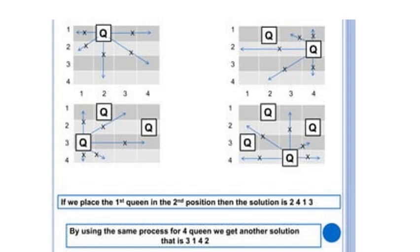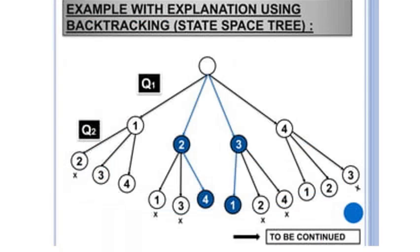This gives us the solution 2-4-1-3, meaning Queen 1 in column 2, Queen 2 in column 4, Queen 3 in column 1, and Queen 4 in column 3. Using the same process for the 4-queen problem, there is another solution: Queen 1 in column 3, Queen 2 in column 1, Queen 3 in column 4, and Queen 4 in column 2, giving solution 3-1-4-2.